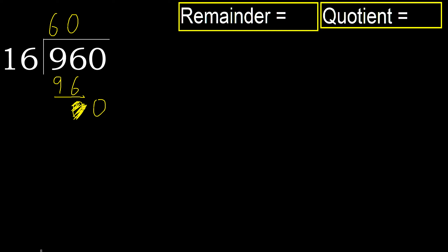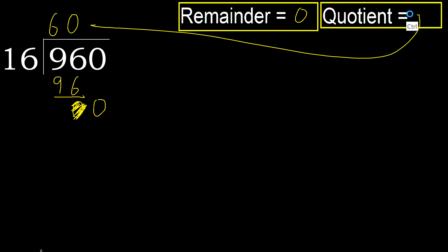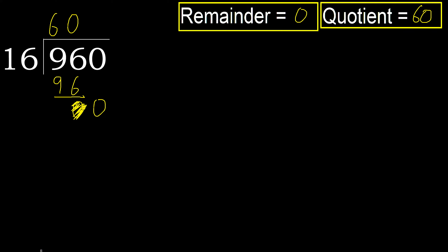Complete with 0, because here we finish it with this number. 960 divided by 16 is 60.